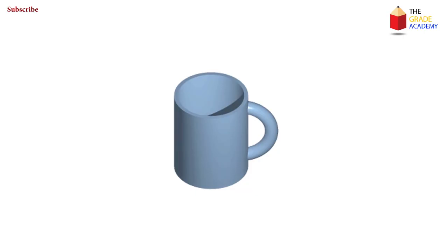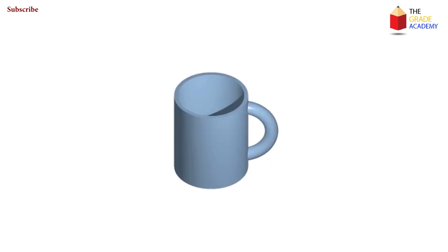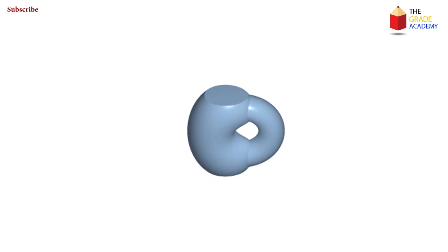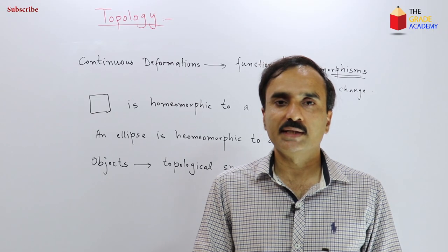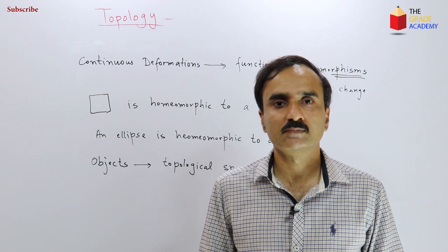A donut and a coffee cup are basically continuous deformations of one another, so they are topologically the same — topologically equivalent, or homeomorphic to each other. Now we will see some of the typical questions that we will be working around throughout our study of topology.